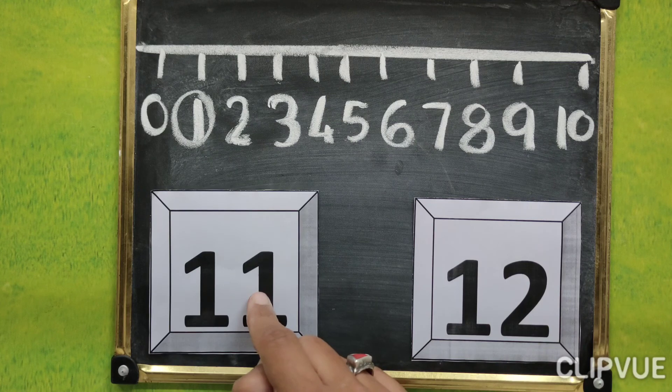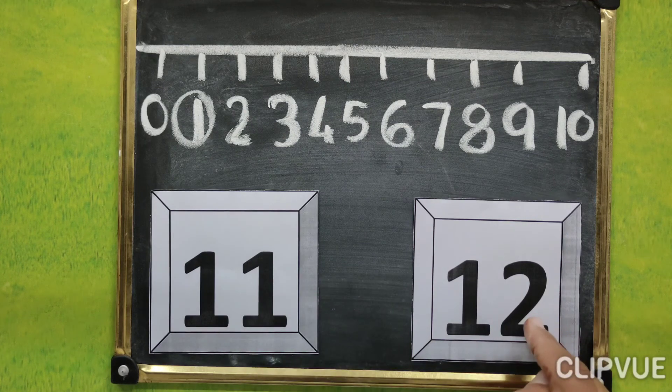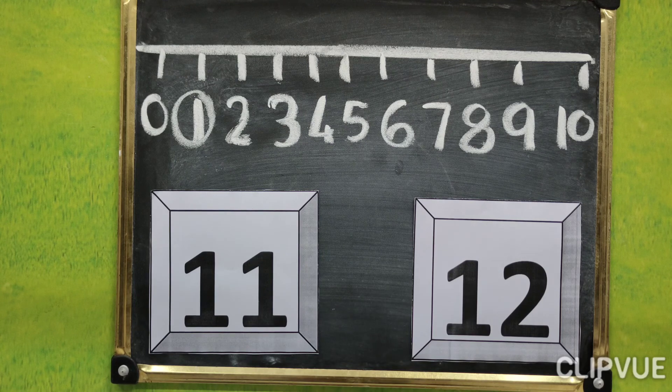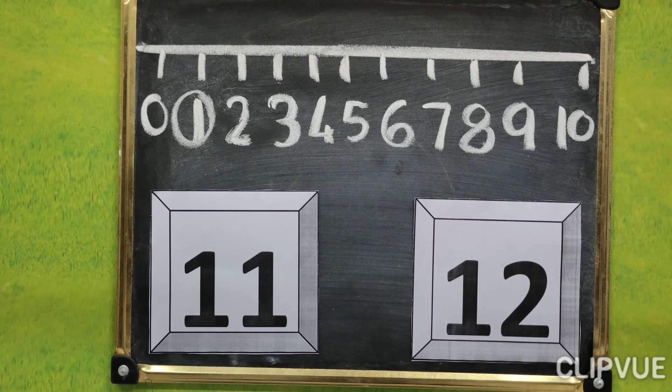So, 1 is small and 2 is big. So which number is big? 12 number is big.